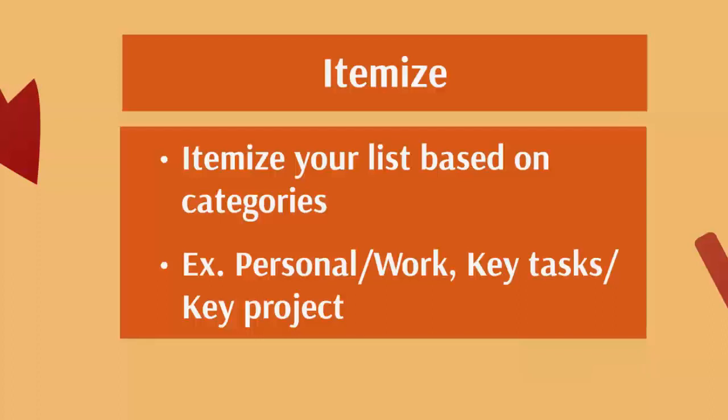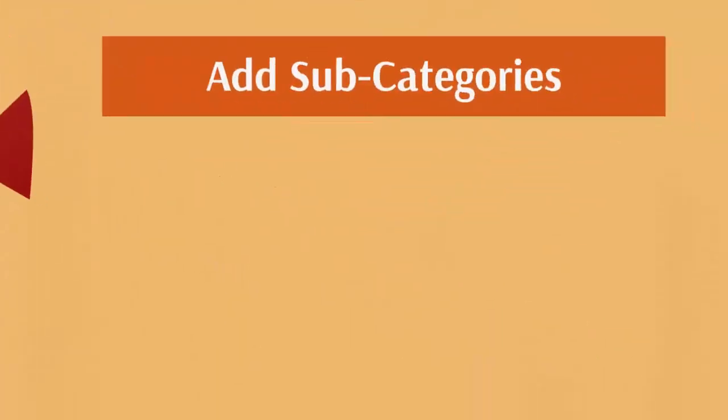A lot of times we don't realize how much time we're spending on personal stuff until we really write it down. We don't realize that all of our time is being spent maybe on the phone, or maybe being interrupted or distracted. And then once we realize that, we say, aha — now I can put stuff in place to prevent that from actually happening.